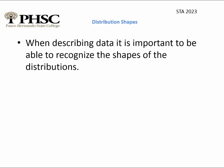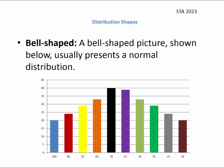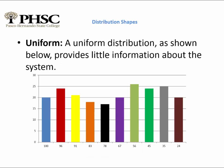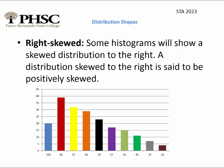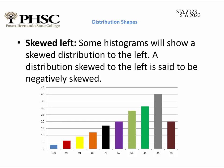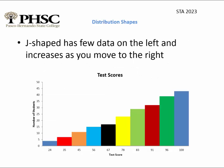When graphing a data set, we want to identify its shape. A bell-shaped distribution looks like a bell curve. A uniform distribution has bars of essentially equal height. A right-skewed distribution is higher on the left, and a left-skewed distribution is higher on the right. A J-shaped distribution increases toward one side rather than peaking in the middle.